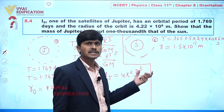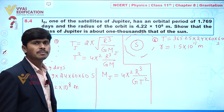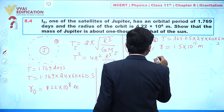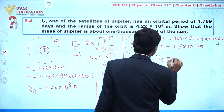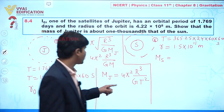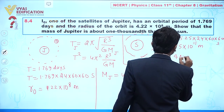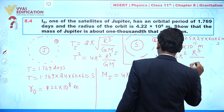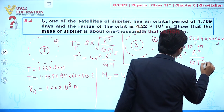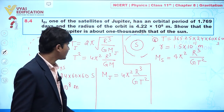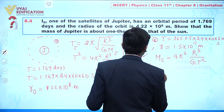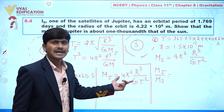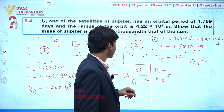We can calculate the mass of the Sun using M_S = 4π²r³/GT². Now if we take the ratio M_J/M_S, the 4π² is constant and will be cancelled out, and G will also be cancelled out.